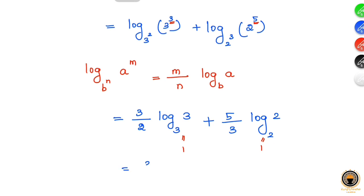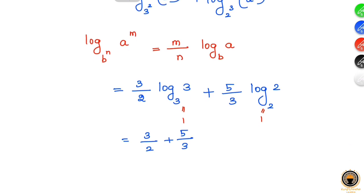Since log of any number to the same base equals 1, both log values become 1. So we get 3/2 plus 5/3. Cross multiplying: 3×3 = 9, 2×5 = 10, and 2×3 = 6, giving us 19/6.